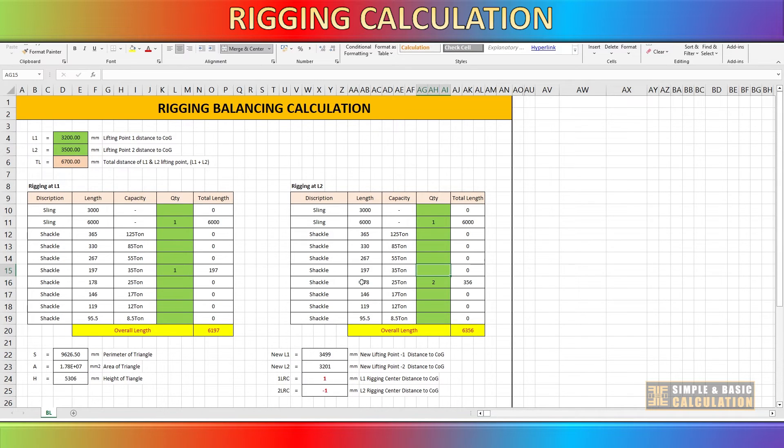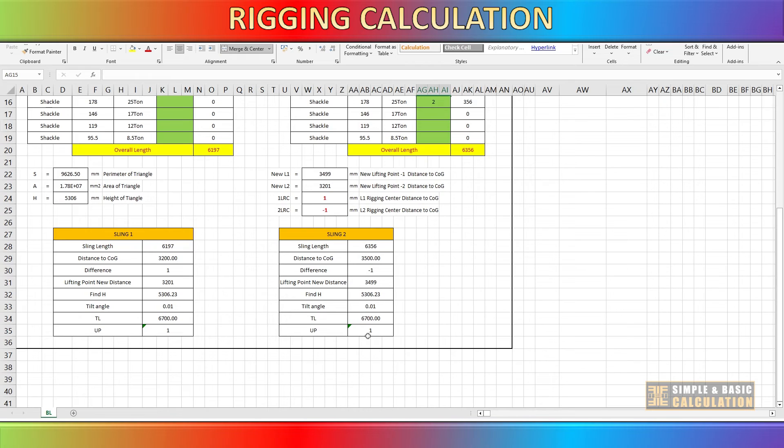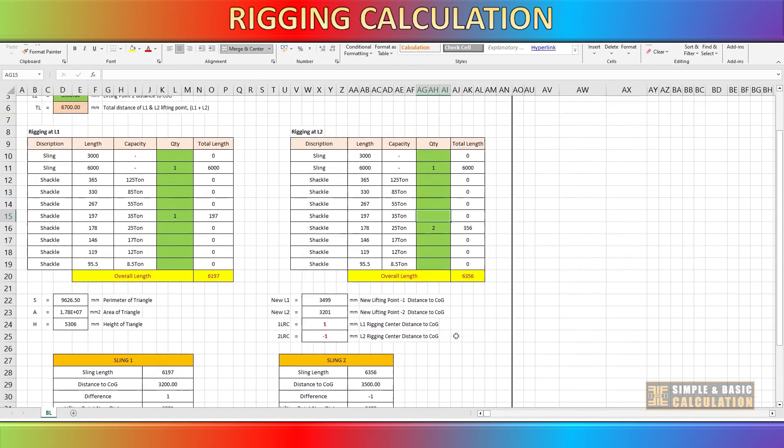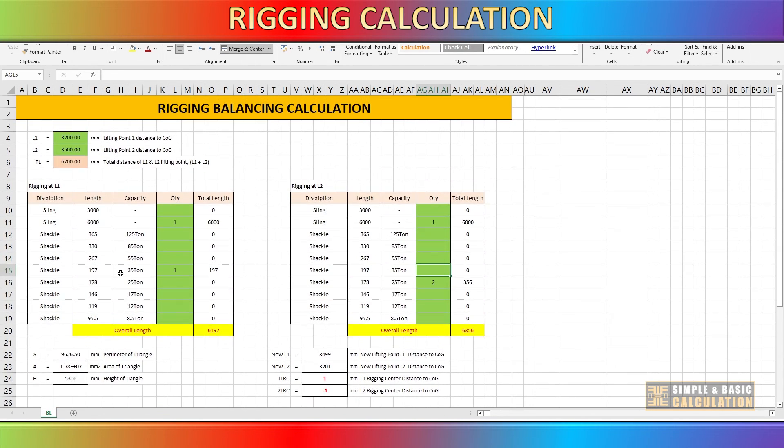After trial and error, I got the closest value of 1, using 1 piece of 35 ton shackle at lifting point number 1, and 2 pieces of 25 ton shackle at lifting point number 2, which is great for our rigging.